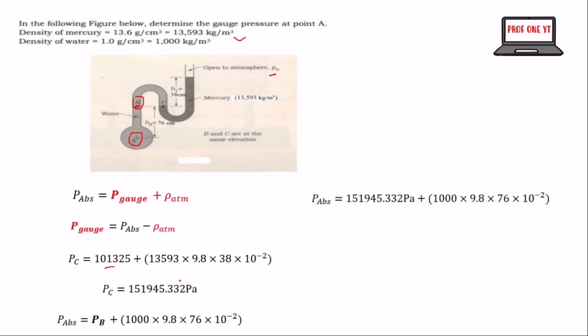When you do that correctly, we get the absolute pressure at A. We know that P_B, the pressure at B, is equal to the pressure at C. So we substitute the pressure at C in place of P_B, and when we do that, we get the absolute pressure at A.